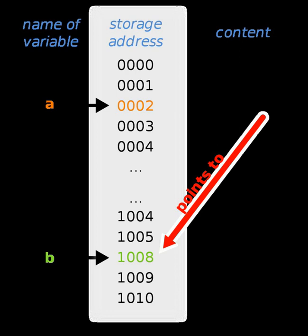These pointer declarations cover most variants of pointer declarations. Of course it is possible to have triple pointers, but the main principles behind a triple pointer already exist in a double pointer. The [] operator has a higher priority than *.